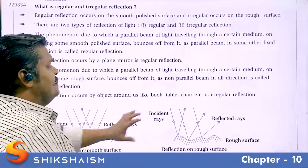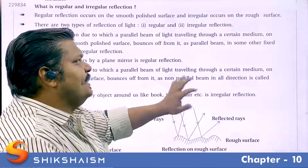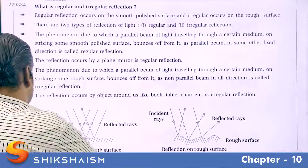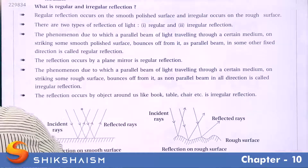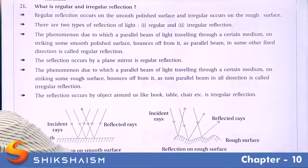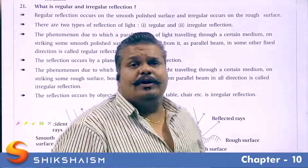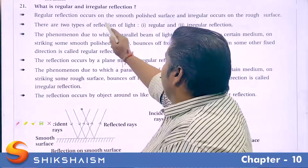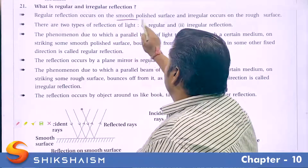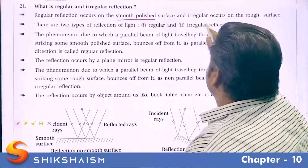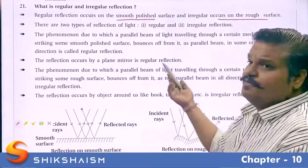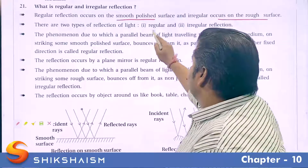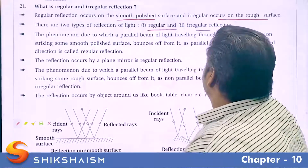This represents irregular reflection. Let's see in detail what regular and irregular reflection are. Regular reflection occurs on a smooth polished surface, and irregular reflection occurs on a rough surface. There are two types of reflection of light: regular and irregular.